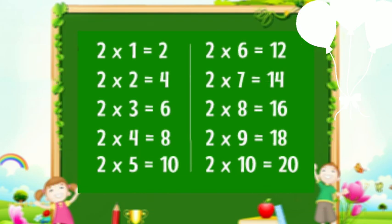2 1s are 2. 2 2s are 4. 2 3s are 6. 2 4s are 8. 2 5s are 10. 2 6s are 12. 2 7s are 14. 2 8s are 16. 2 9s are 18. 2 10s are 20.